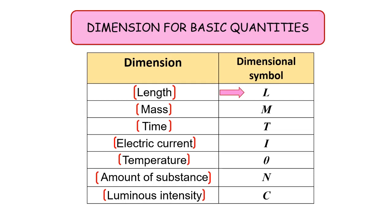Let's look at the definition: L for length, capital M for mass, capital T for time, capital I for electric current, Theta for temperature, capital N for amount of substance, and capital C for luminous intensity.